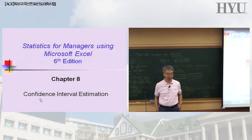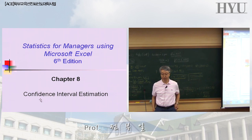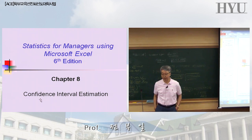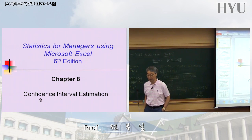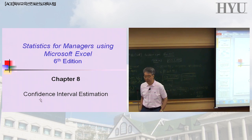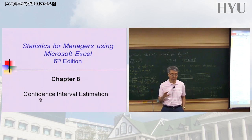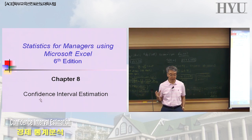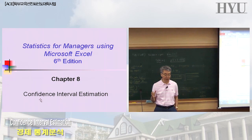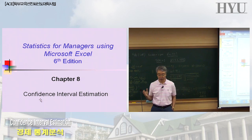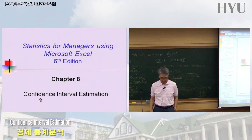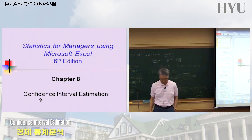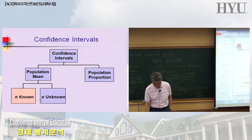We're covering inferential statistics, specifically interval estimation. There are two types: interval estimation versus point estimation. Point estimation is hypothesis testing, which will be covered in chapters 9 and 10. Chapter 8 is about confidence interval estimation.